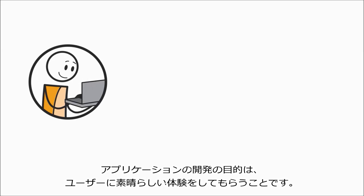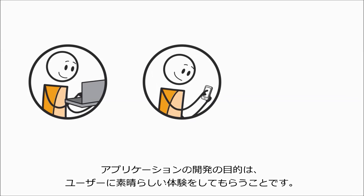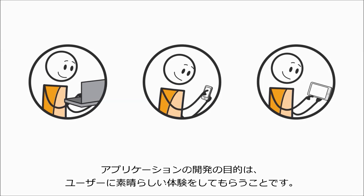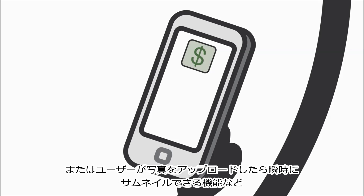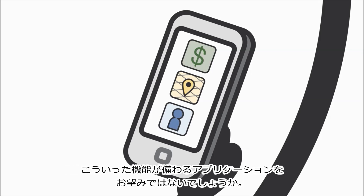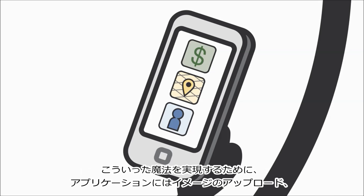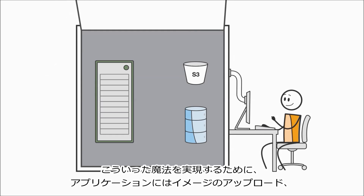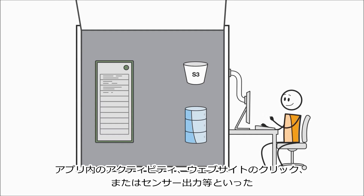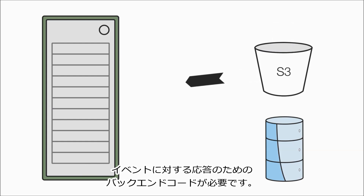When you're building applications, you want them to deliver a great experience for your users. Maybe you want your application to generate in-app purchase options during a gaming session, rapidly validate street address updates, or make image thumbnails available instantly after a user uploads photos. To make this magic happen, your application needs back-end code that runs in response to events like image uploads, in-app activity, website clicks, or sensor outputs.